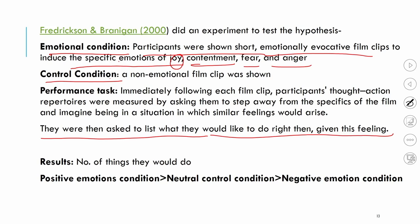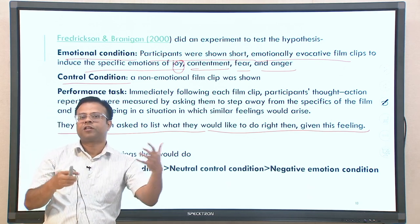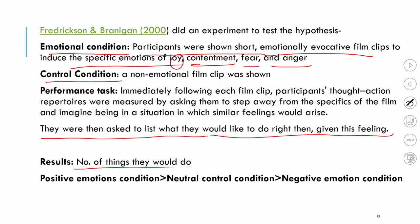The emotion was already induced and participants were asked to imagine a situation where similar emotion arises — so what would they do under this emotion? They were asked to make a list of activities. The result found that participants in the positive emotion conditions — joy and contentment — reported the highest number of activities they would do.